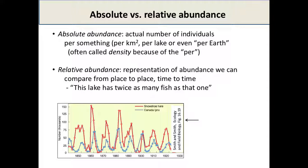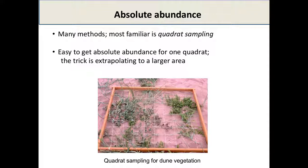We talked a little about the dataset in the first lecture — the population size of snowshoe hare and Canadian lynx and how these vary through time. Is that an estimate of absolute or relative abundance? It's relative — we're not saying there were exactly 75 lynx in 1865 and 15 in 1870; we're measuring how that changes through time.